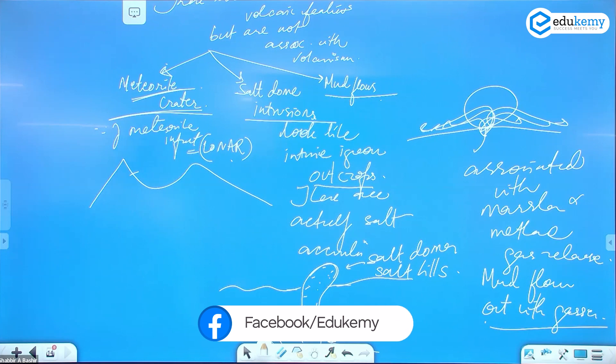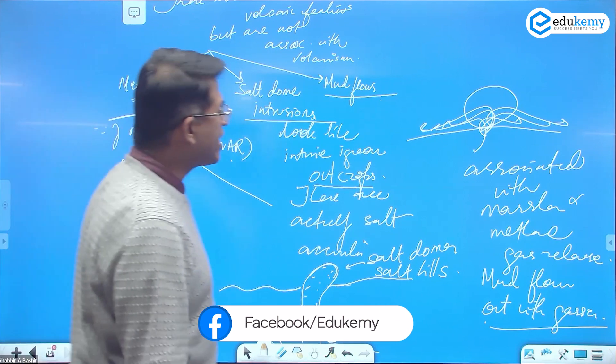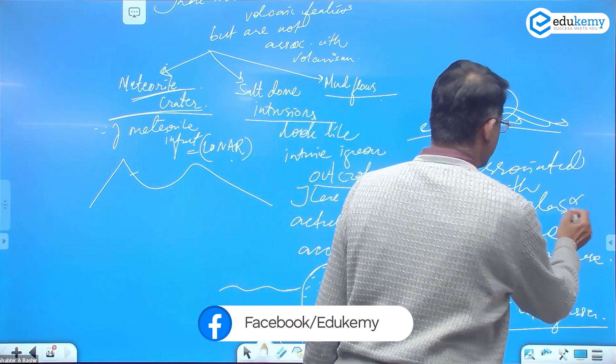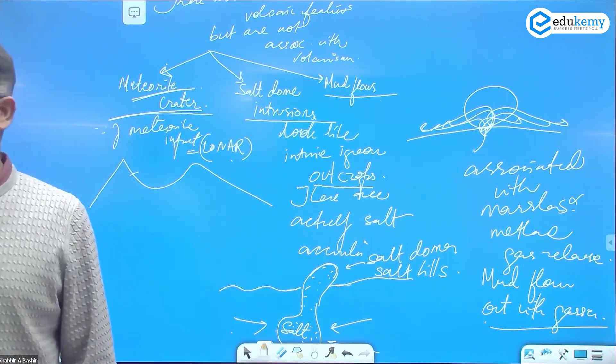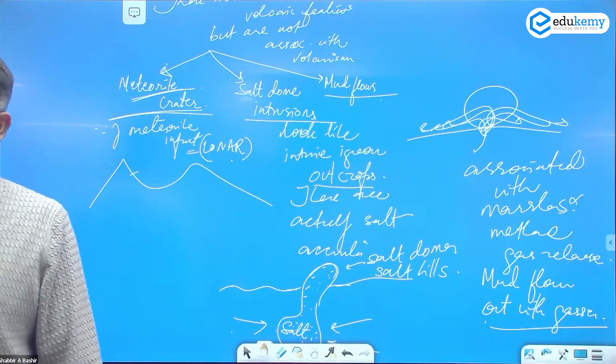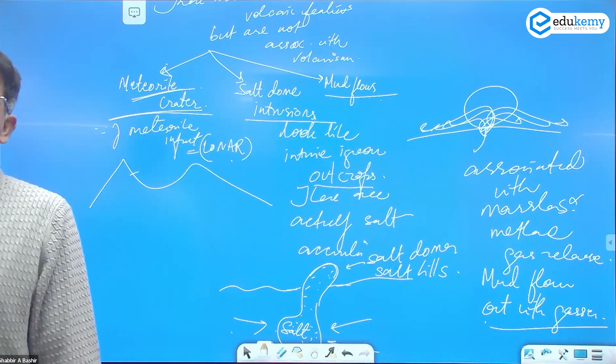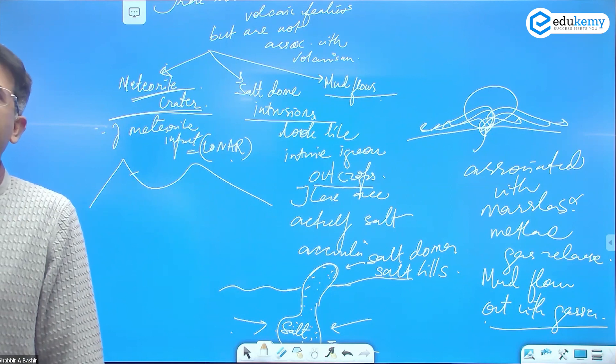Mud flows out with the gases. So mud is flowing out like a mud flow, river of mud. They look like lavas but they actually are associated with marshes. Marshes, swamps, and I hope all of us know this.